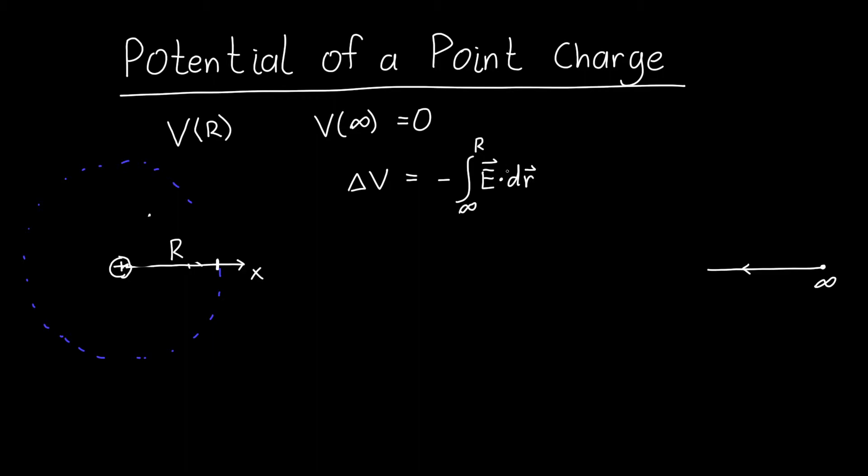And so how do we calculate this dot product E dot dr? Well if we're only worried about the x-axis then E is just equal to the electric field for a point charge which is 1 over 4π epsilon naught times the value of our charge Q divided by R squared. In this case since we're on the x-axis the distance away is just the x distance so this is x squared.